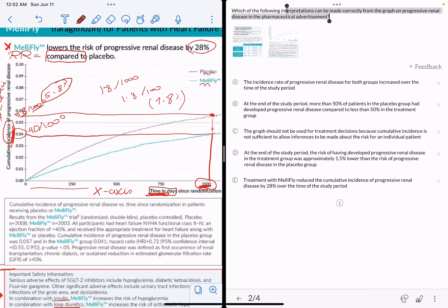The graph should not be used for treatment decisions because cumulative incidence is not sufficient to allow inferences to be made about the risk for an individual patient. Of course not—we have a study with enough patients representative of the population, and when I use a lot of patients, it's more likely to resemble the risk for an individual. So this is incorrect.